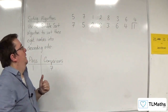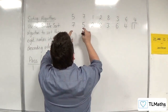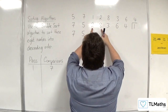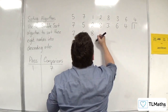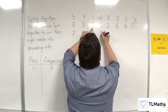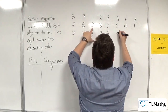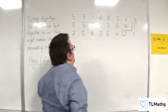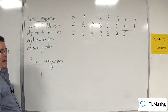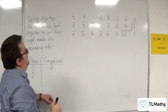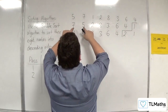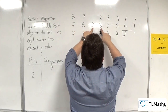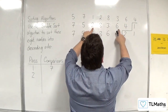So let's go for pass two now. We're comparing seven and five — seven is larger than five. Five and two — five is larger than two. Two and eight — eight is larger than two. Three is larger than two, six is larger than two, and four is larger than two. So two has bubbled to the top, and we cap those off. So in the second pass, we made one comparison, two comparisons, three comparisons, four comparisons, five comparisons, six comparisons.